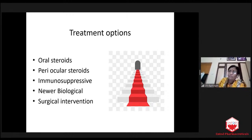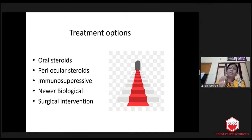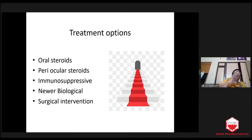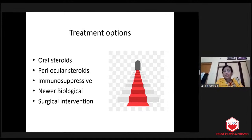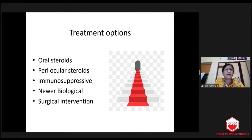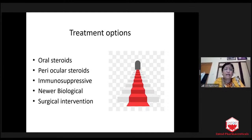It is a step-later technique. Nowadays nobody does cryo or laser unless they have neovascularization. When they have neovascularization, we definitely do panretinal photocoagulation. Steroid — we usually give 1 mg per kg body weight. Most children are 40 kg, adults are 60 kg. Then we slowly taper and we give only 20 mg of triamcinolone. If needed, we give more.